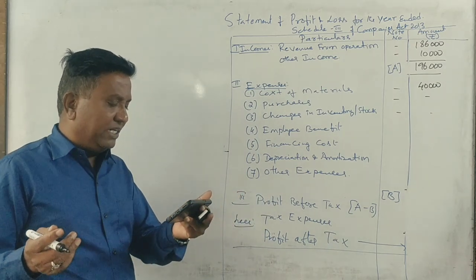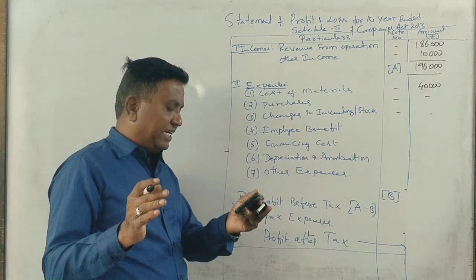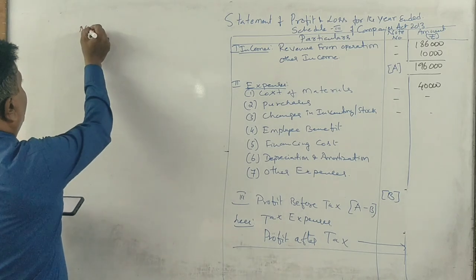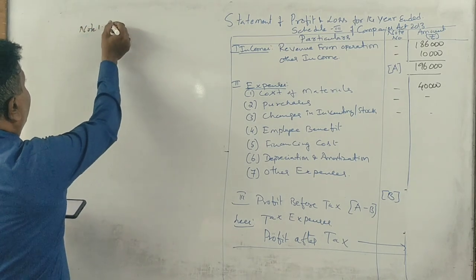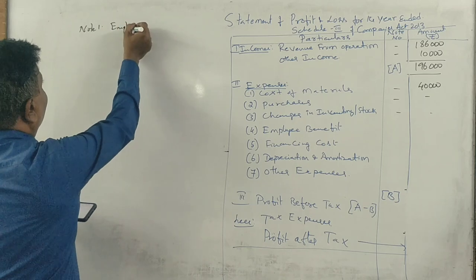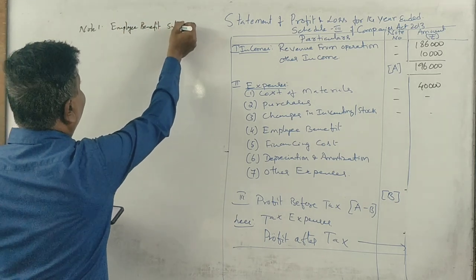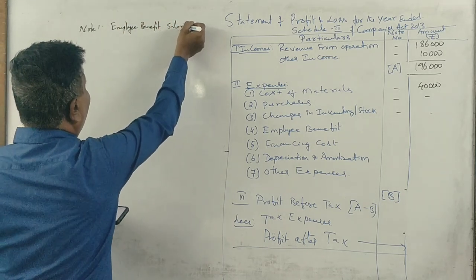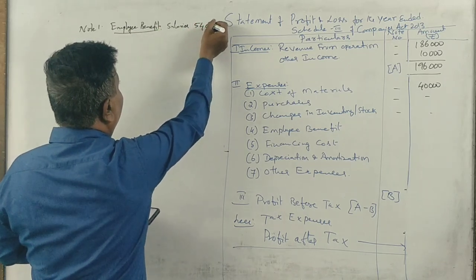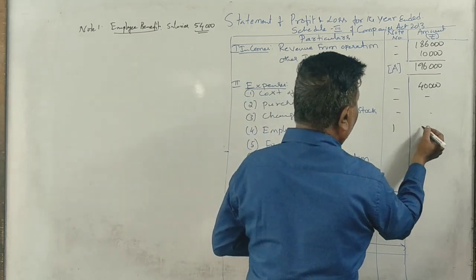Employee benefit expenses — you put it? Salaries only, $1,000. Note number 1: Employee benefit — salaries — $54,000.